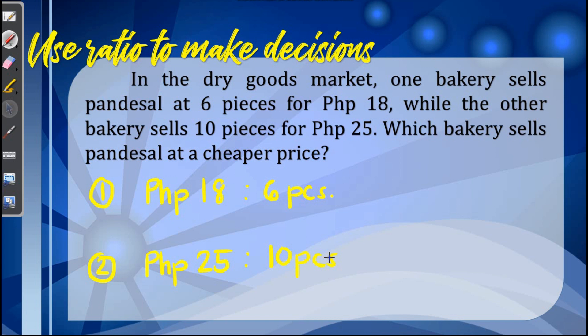How will we know which one gives a cheaper price? We can do this by dividing 18 by 6, and then we'll get a value of 3 pesos, which means per piece is 3 pesos. While for the second bakery, 25 divided by 10 gives us 2.50 pesos per piece. So based on the price per piece, it shows that the second bakery sells pandesal at a cheaper price.